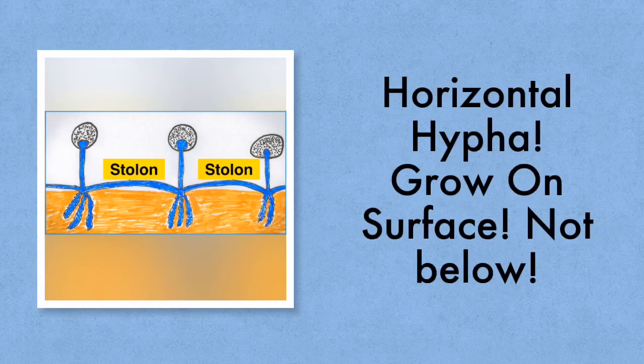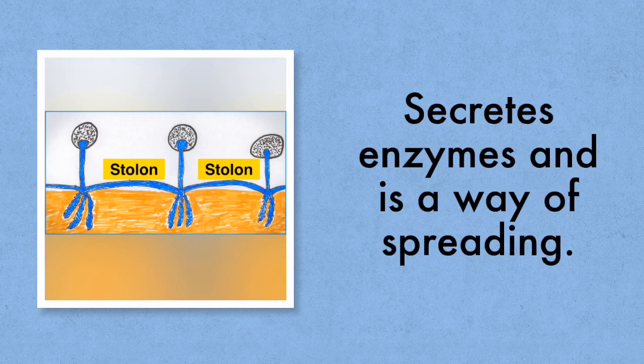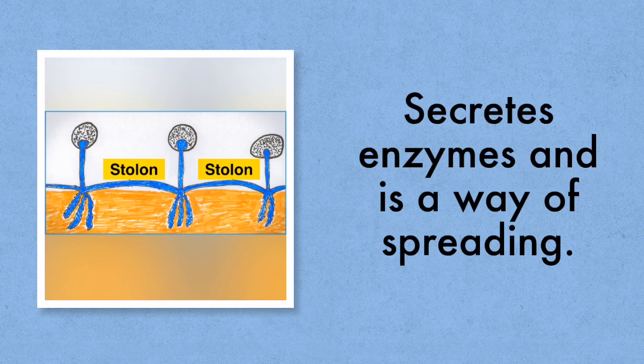A type of hyphae that grows along the top of the substrate is known as a stolon. Think of the burglar as they're stealing away. These stolons help the fungus to spread and they also can secrete those digestive enzymes so they're aiding in that way too.